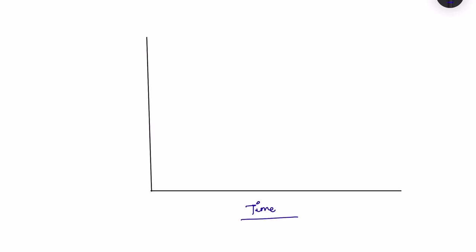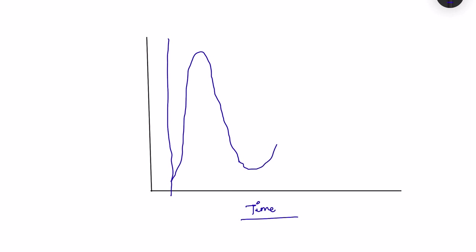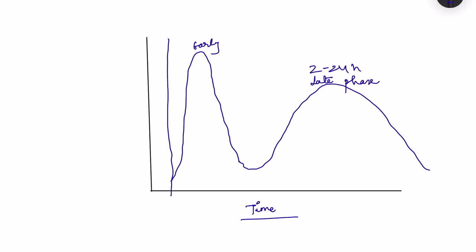Type 1 hypersensitivity reaction has two phases. Graphically, immediately after allergen exposure there is an early reaction due to mast cell degranulation and release of arachidonic acid metabolites. Then approximately 2 to 24 hours later, there is a late phase reaction, which occurs due to recruitment of eosinophils, neutrophils, basophils, and monocytes to the site of antigen exposure, ultimately leading to tissue damage.